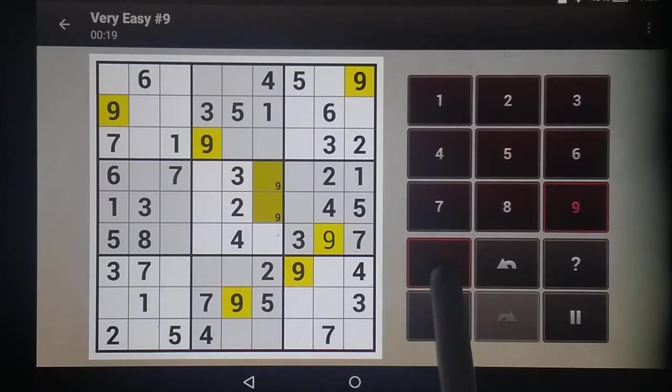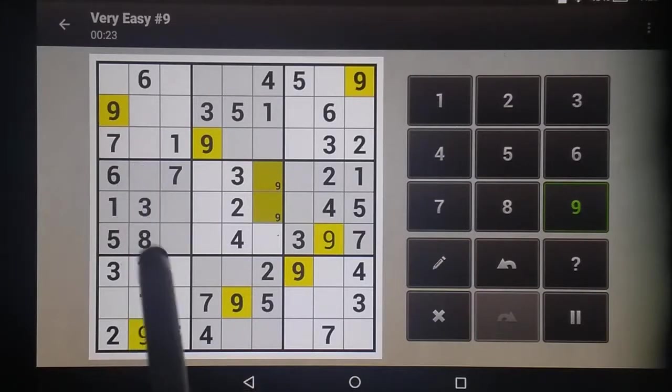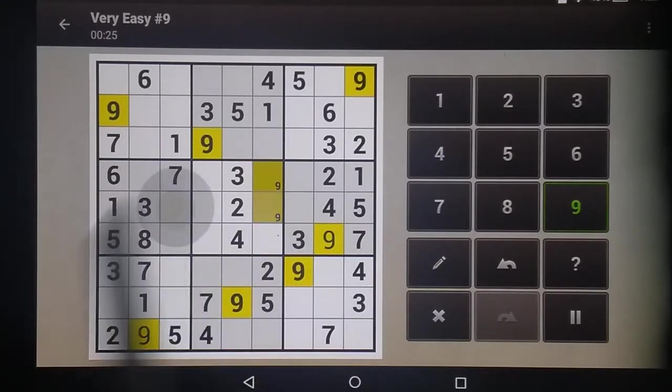These two rows are blocked, so I do know this has to be there, which then blocks this one. This one is blocked here, so this has to be here, and now I know where that 9 goes.